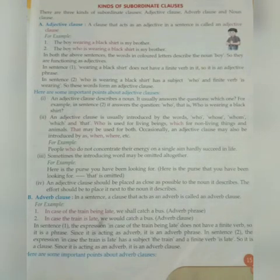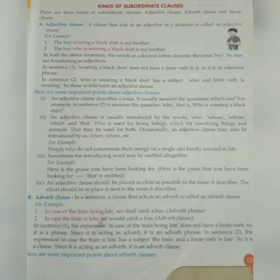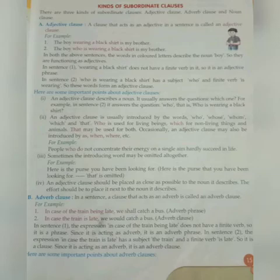In the previous class we covered clauses — a group of words which forms part of a sentence and contains a subject and a finite verb of its own. We saw two kinds of clauses: principal clause, which makes complete sense independently, and subordinate clause, which depends on another clause for its meaning. Today we start with the kinds of subordinate clauses.